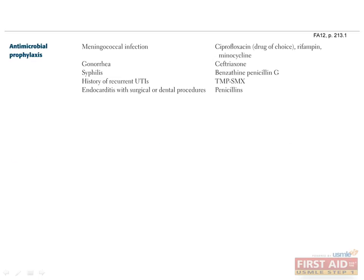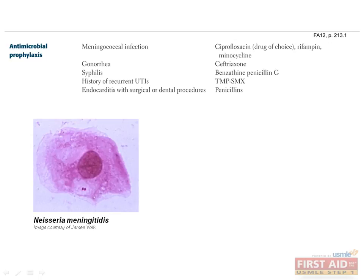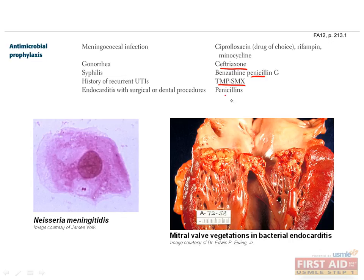In certain patient populations, prophylaxis against organisms is warranted. Rifampin and minocycline are used for meningococcal infection prophylaxis. Ceftriaxone is prophylactic against gonorrhea. TMP-SMX is used in patients with recurrent UTIs. Penicillins are still the drug of choice for prophylaxis against endocarditis in minor surgical and dental procedures. Benzathine penicillin G provides prophylaxis against syphilis.